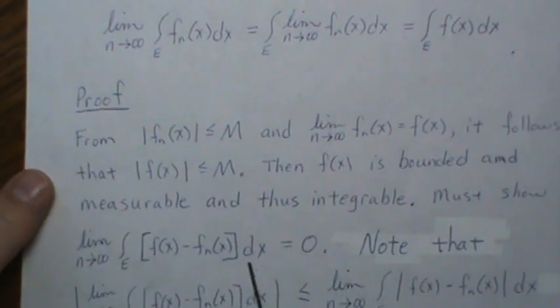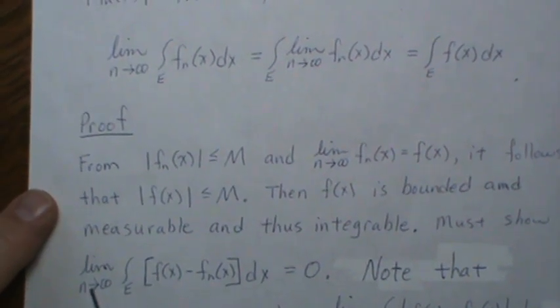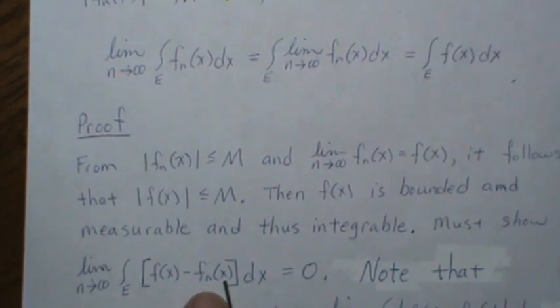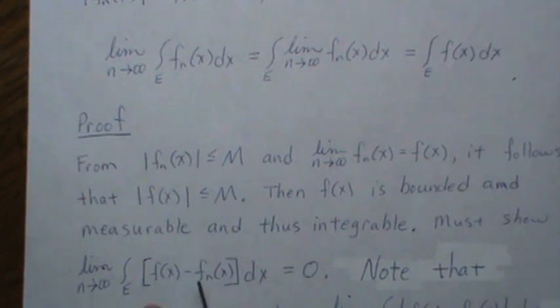Must show that this is equal to zero, and we could technically break this into two pieces, take this and subtract it over, but since you can take the integral of the difference.